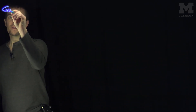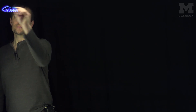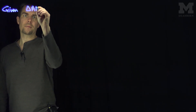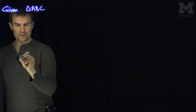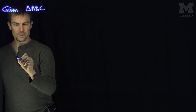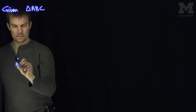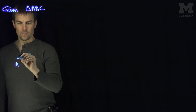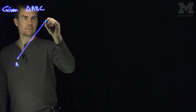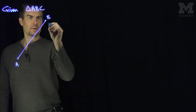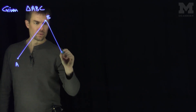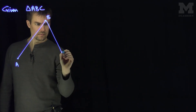If we're given a triangle A, B, C, let's draw this triangle. So here's A, then we'll go up to B, and then down to a point over here, C.